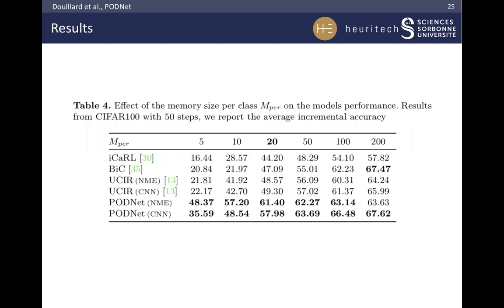In this table, we compare the models when changing the amount of rehearsal memory. It is the number of images kept for each old class. We try from 5 images to 200 images. With 200 images per old class, our model is comparable to BIC. But as we keep fewer and fewer images, we see that all results start to fall down. With only 5 images per old class, our result is much, much higher than previous results. We outperform the previous state-of-the-art, UCIR, by up to 26 points.